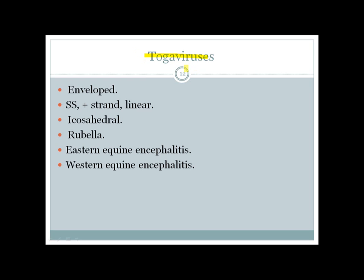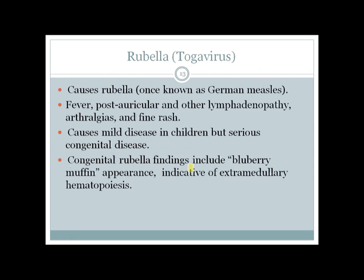Togavirus — from the retro toga party — is a positive-strand virus. The three important viruses in this group are Rubella, Eastern equine encephalitis, and Western equine encephalitis. Rubella causes German measles: the patient presents with fever, lymphadenopathy especially in the posterior region, and most importantly a fine rash.